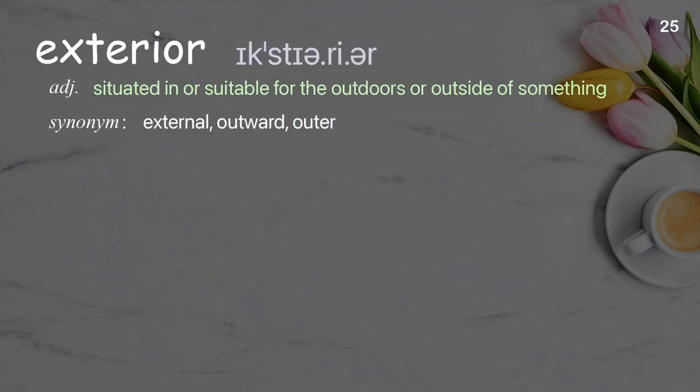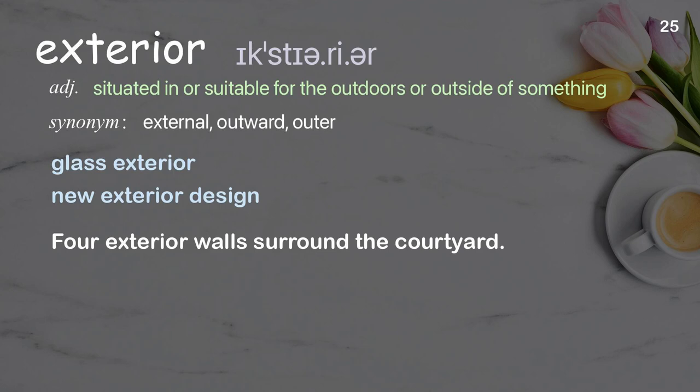Exterior. Situated in or suitable for the outdoors or outside of something. Examples: glass exterior, new exterior design. Sentence: Four exterior walls surround a courtyard.